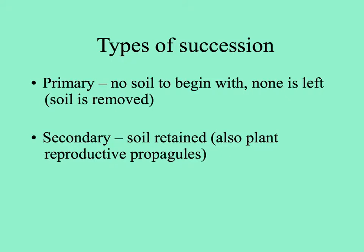Another way of distinguishing primary and secondary succession is the presence of soil. Primary starts with bare rock — no soil to begin with. In secondary succession, the soil that's developed previously is retained, and also plant propagules — seeds and storage roots, etc.